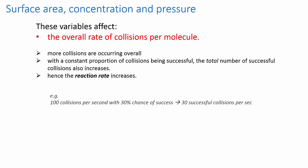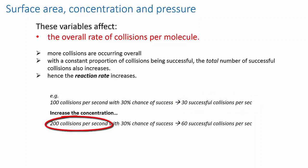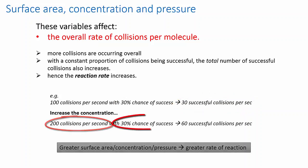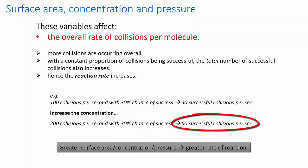To give you a really simple numerical example, imagine a situation in which molecules were undergoing 100 collisions per second with a 30% chance of being successful. That would mean that, on average, you would have 30 successful collisions per second. Now, if you increase the concentration so that there are 200 collisions per second, you've still got a 30% chance of being successful, but that gives you, on average, 60 successful collisions per second.